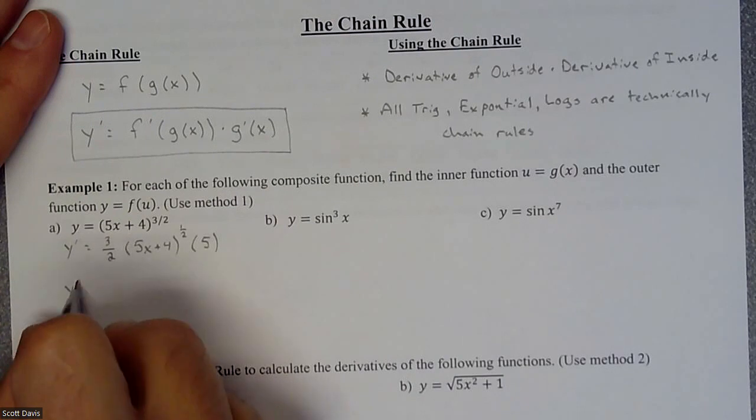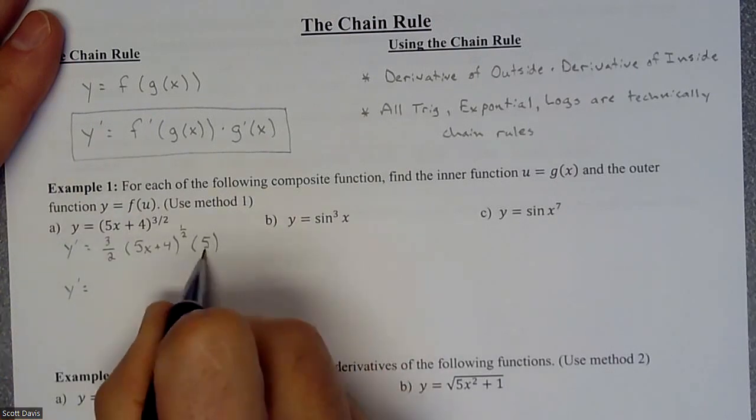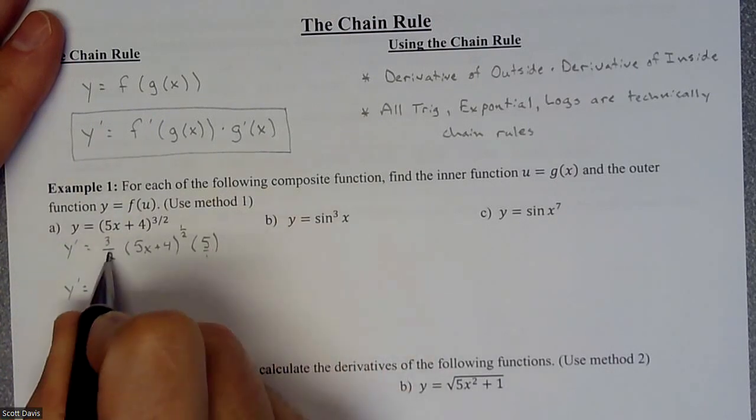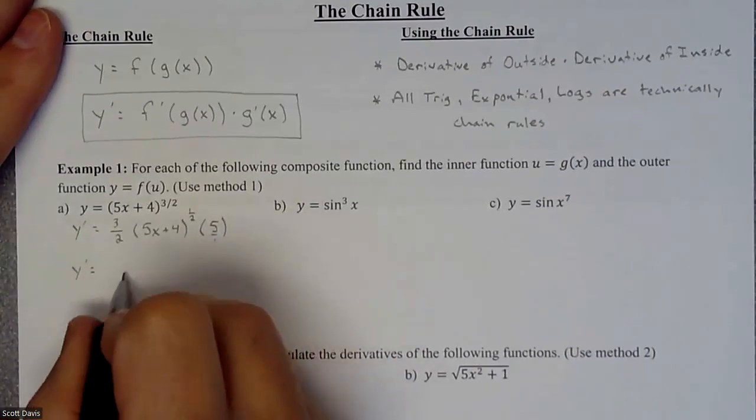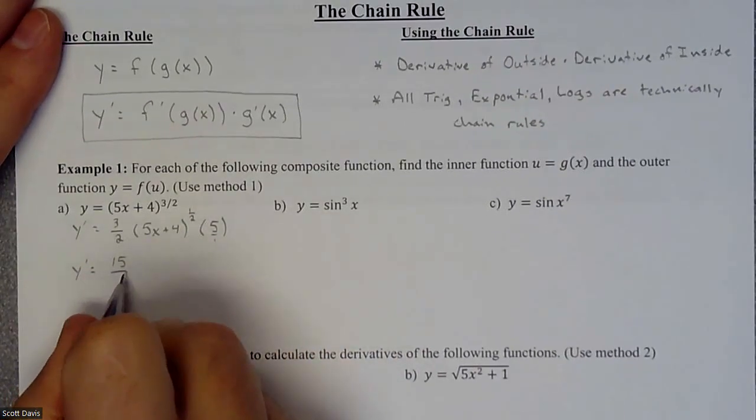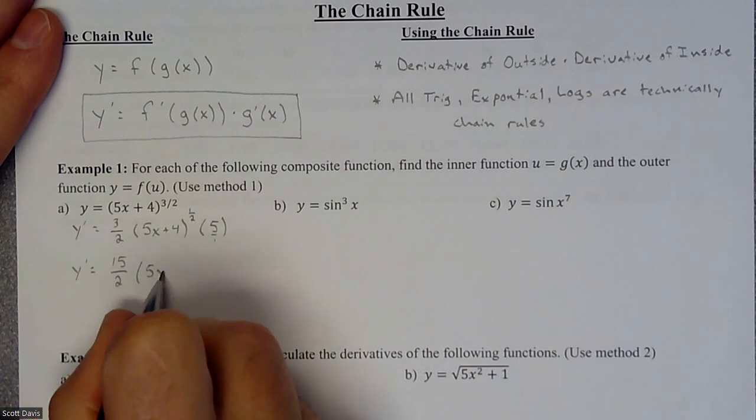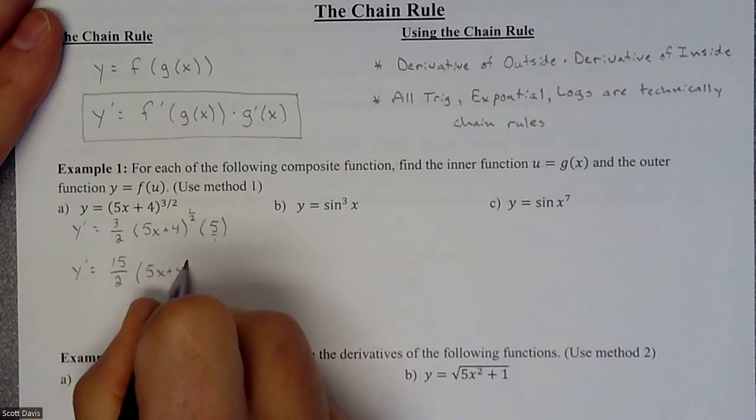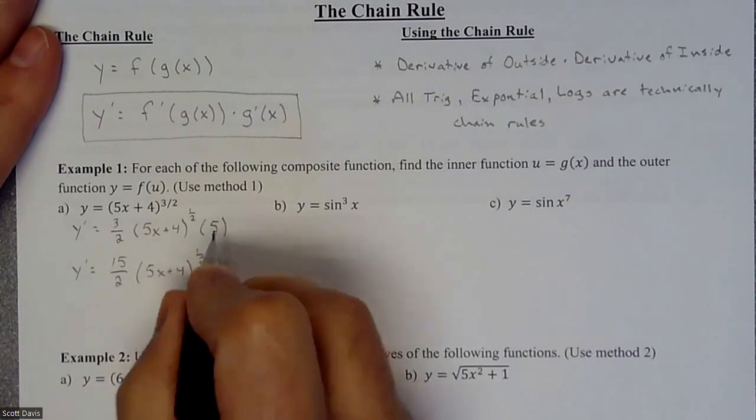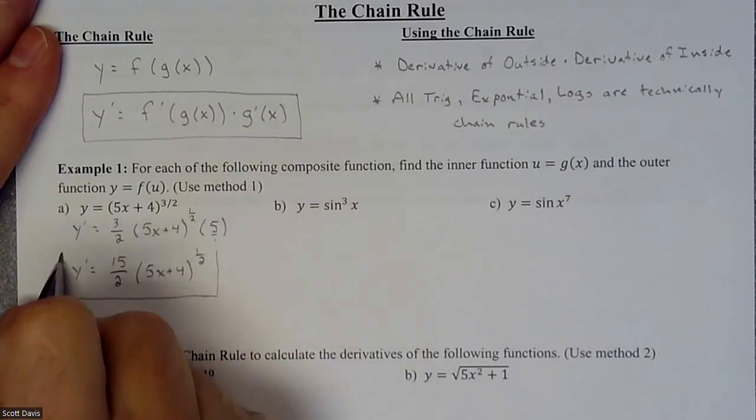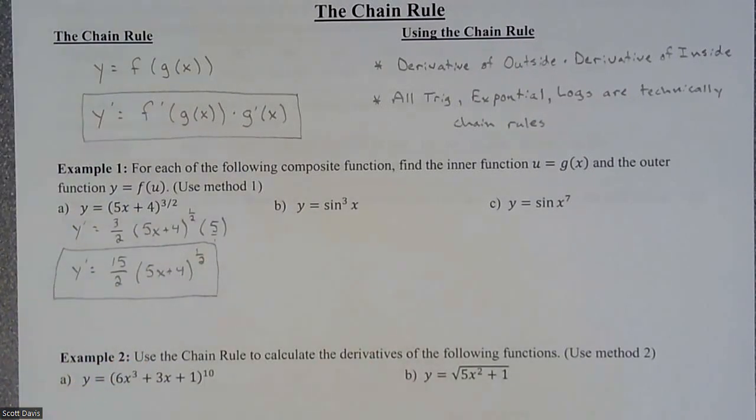So usually there's a little bit of cleanup that we have to do. So let me put this over one. I can take the five over one times the three over two. And that's going to get a 15 over two times five x plus four raised to the one half. So there's our first example with a chain rule.